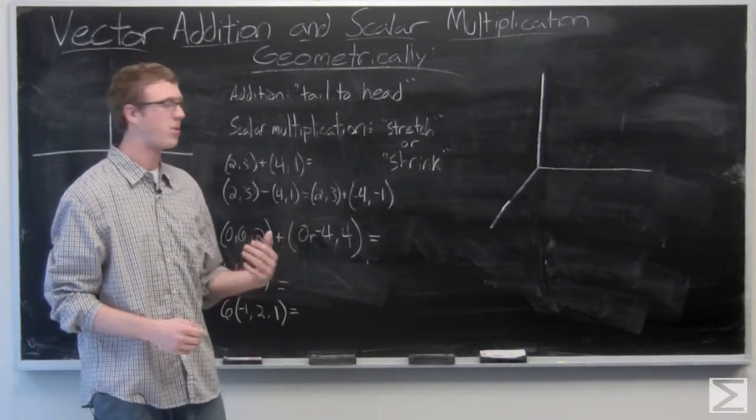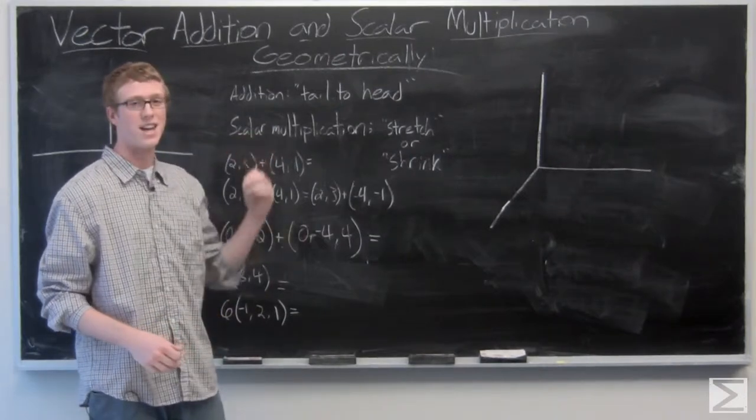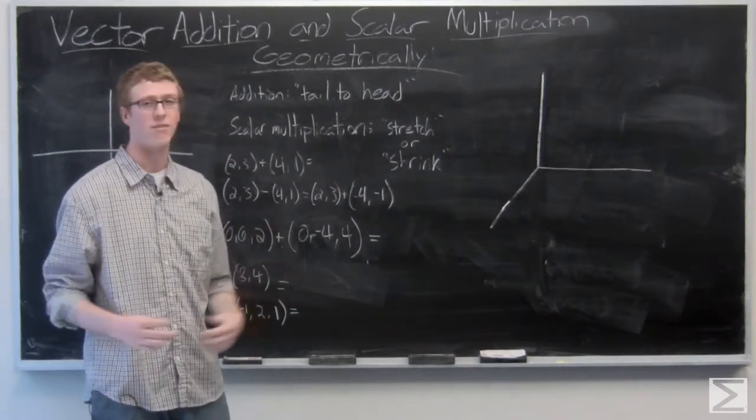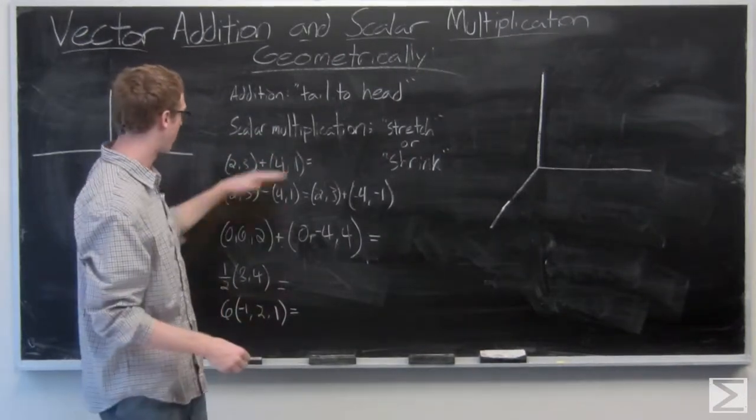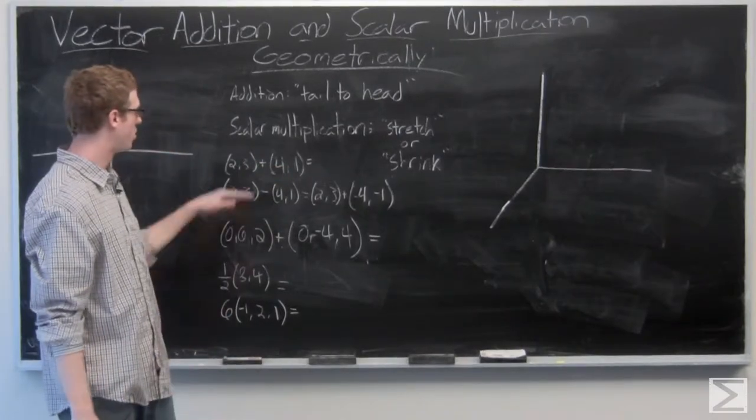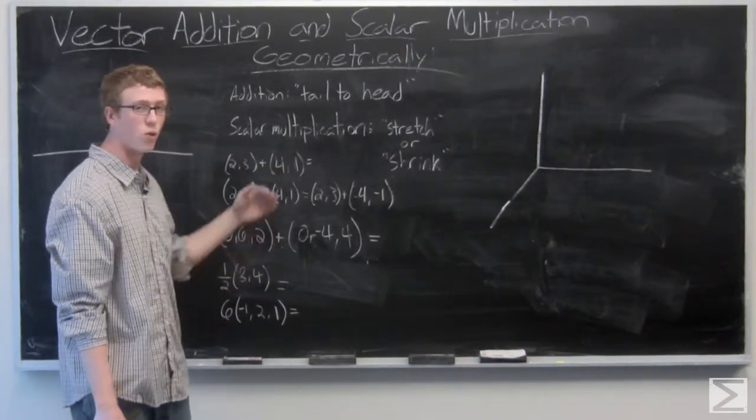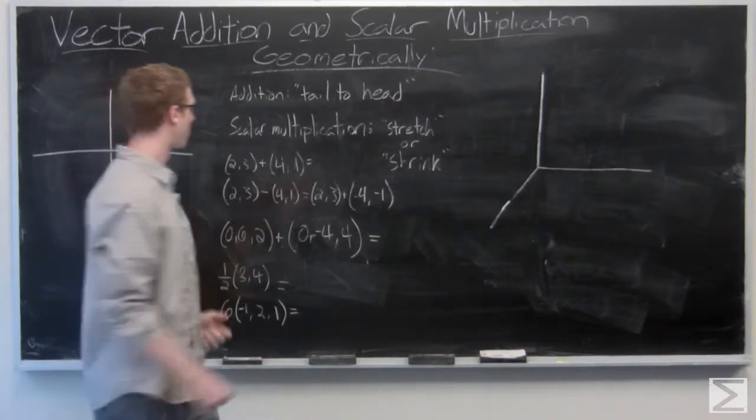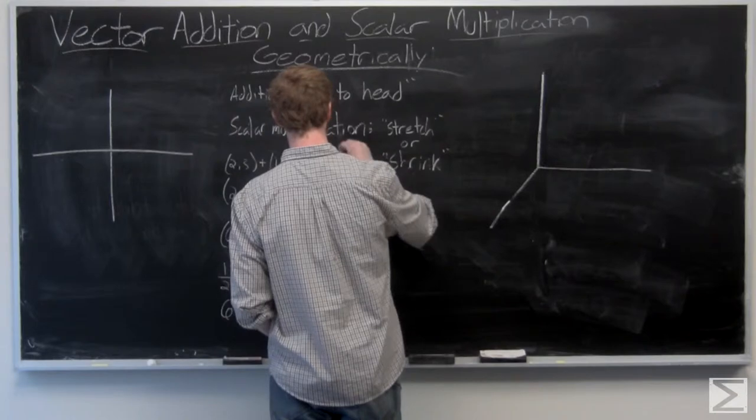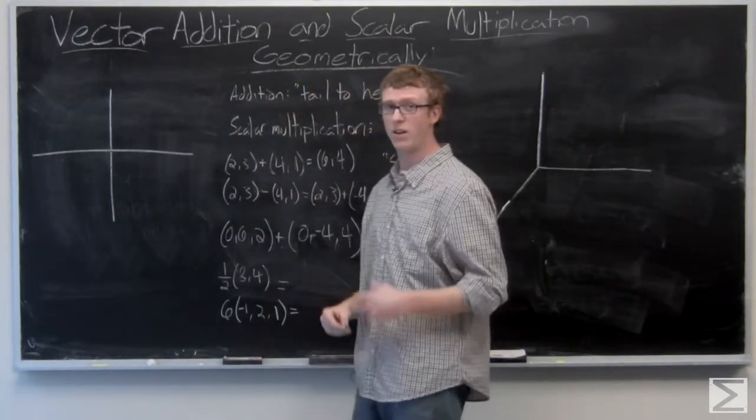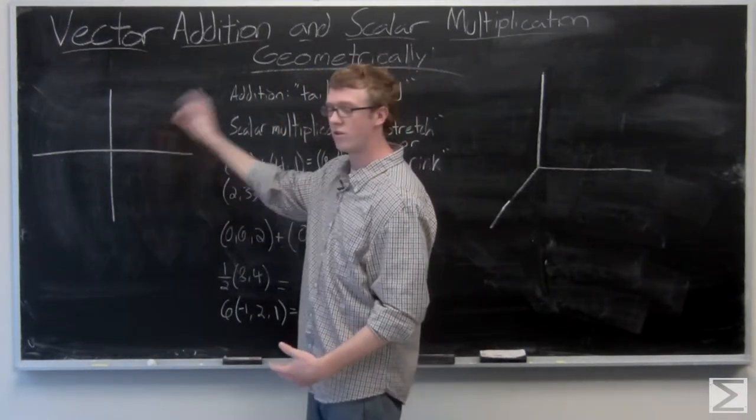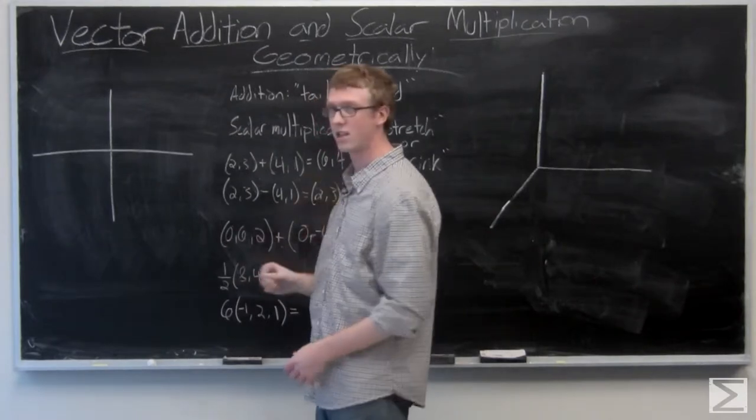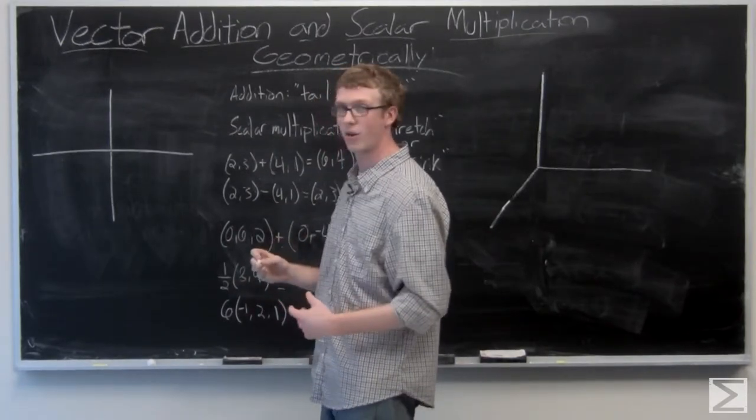When we add them geometrically on the plane, we're going to say that we're adding tail to head. So we're immediately going to check out an example of that. We have the vector (2,3) plus the vector (4,1). The resultant vector, adding component-wise, is (6,4). And we could just go ahead and draw a vector that is (6,4), but let's take a look at how we're going to get there.